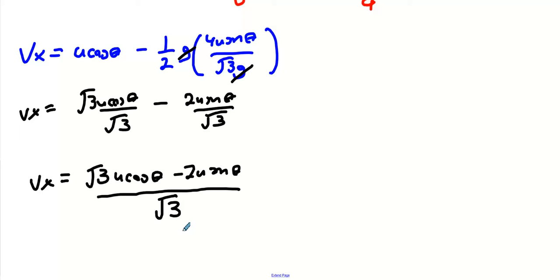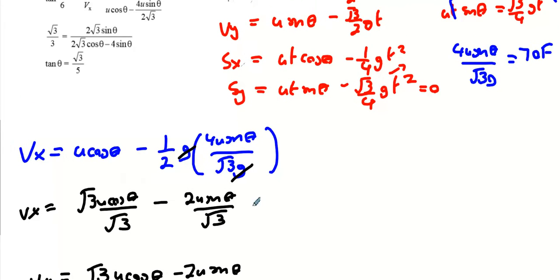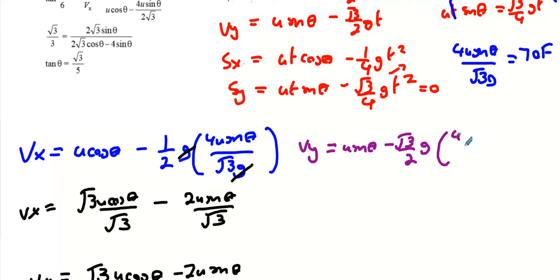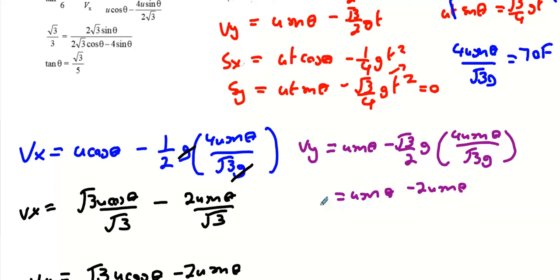Next we find φy at time of flight using a similar method. φy = u sin θ − (√3/2)g · [4u sin θ / (√3·g)]. The √3 and g cancel, giving u sin θ − 2u sin θ. So φy at time of flight = −u sin θ.